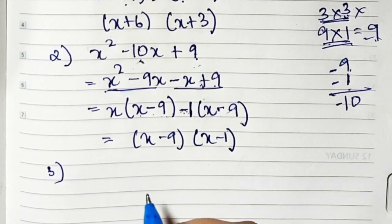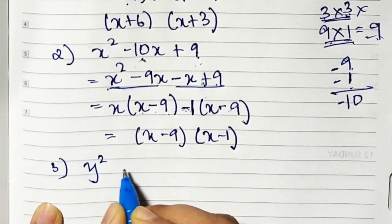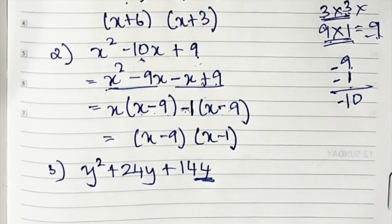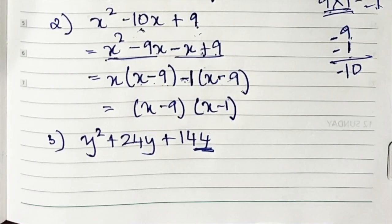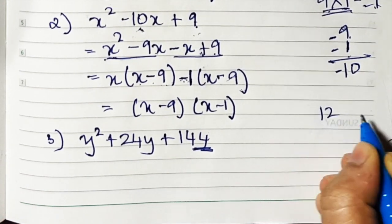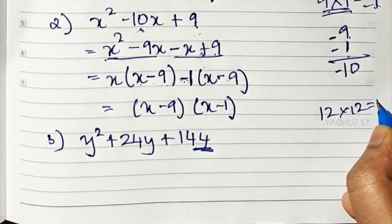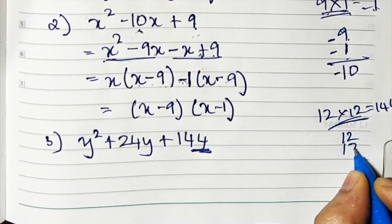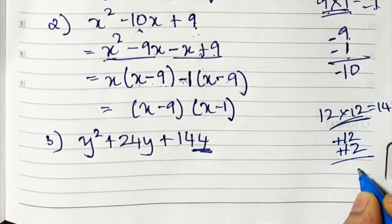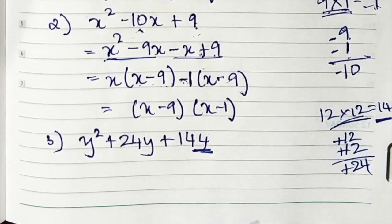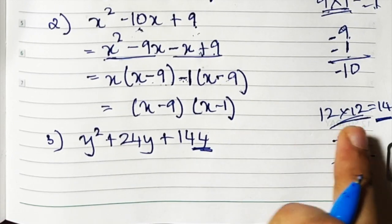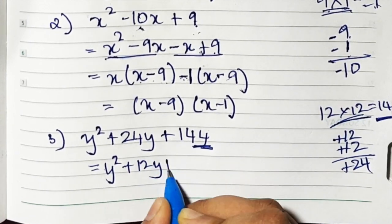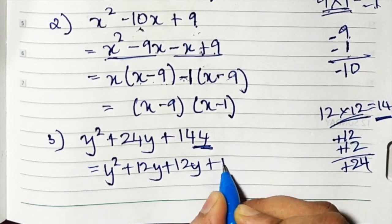Now let's do sum number 3. The question is y squared plus 24y plus 144. I have to break 144. We all know that 12 squared is 144, so 12 times 12 is 144. If we add 12 and 12, we get 24. So we need plus 24, meaning signs will be plus only. Plus 12 plus 12 gives me plus 24. So I need to break 24y into 12y plus 12y. It will be y squared plus 12y plus 12y plus 144.